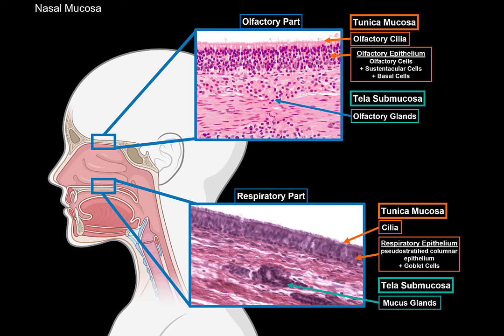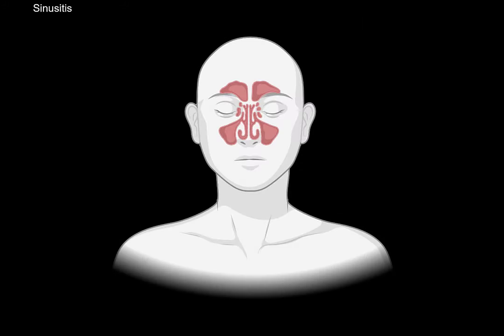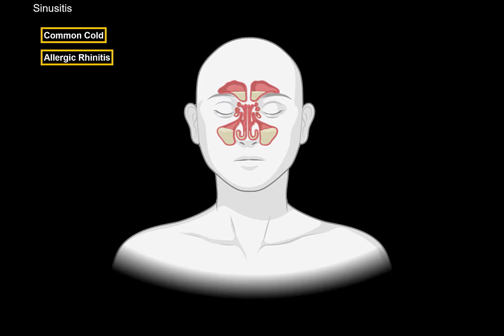Each part of the nasal cavity has its own specific function in respiration, smelling, and even defends against any unwanted particles. Although sometimes, certain conditions may lead to excessive inflammation and swelling of the nasal and sinus mucosa, leading to an increased secretion of mucus, which may block the sinuses. These conditions may be caused by common cold or certain allergies, where allergens like pollen may cause a hypersensitivity response causing swelling in the mucosa. Another cause could be nasal polyps, which may block the outflow of mucus from the sinuses, leading to inflammation and sinusitis. Or even a deviated septum — meaning the septum of the nose is a little deviated — leading to an increased chance of blocking these sinuses. This gives you an understanding of why it's so important to know the meatuses and where they open up to.